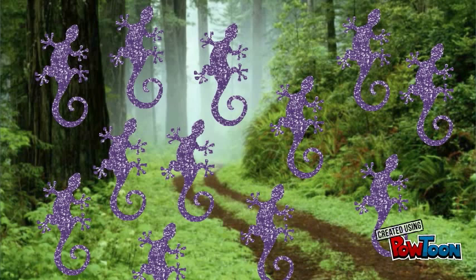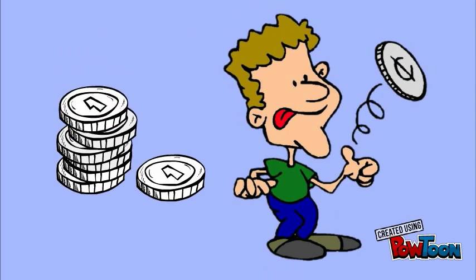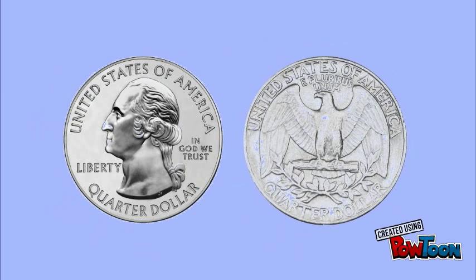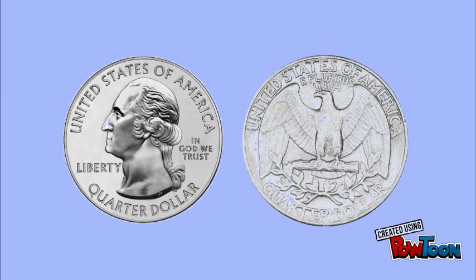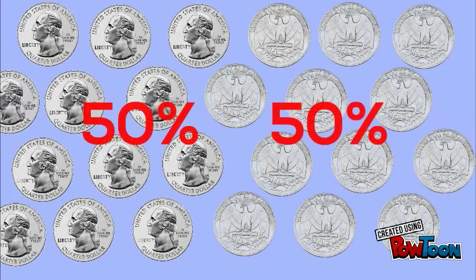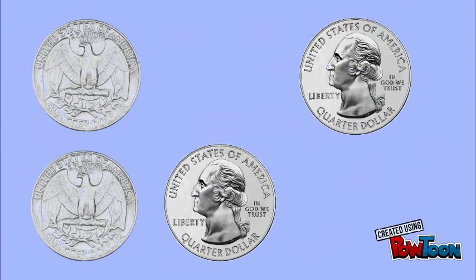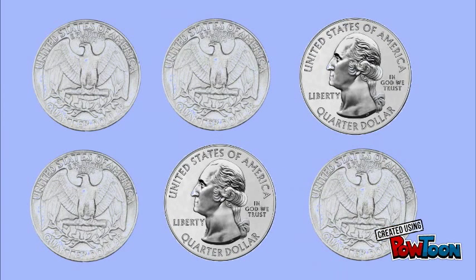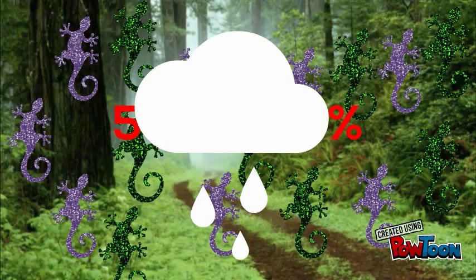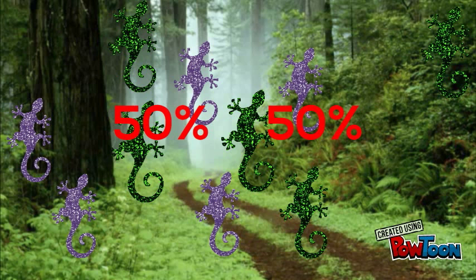We can understand this with the example of flipping a fair coin. A coin only has two sides — heads and tails — so if we flip the coin thousands of times, it will land on each side about 50% of the time. However, if we do not flip the coin enough times, the results have a higher chance of being unevenly distributed. Likewise, if a population is large, it is less likely to be affected by a sudden change in a portion of its constituents.